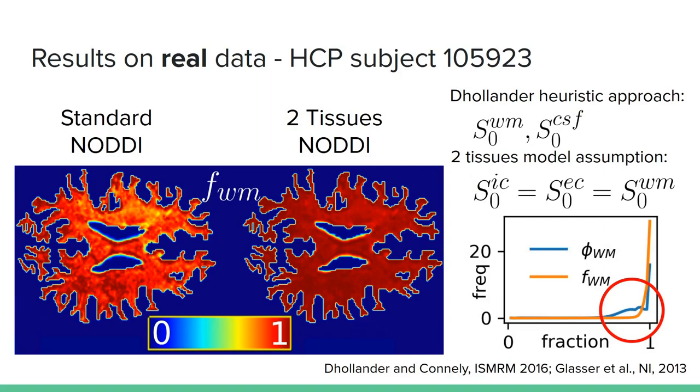In particular, the heuristic approach of Dolander can be used to estimate the S₀ of the white matter and the CSF tissues, and that's what we used in this example, where a subject from the Human Connectome Project database was processed with the two-tissue modeling formulation. You can notice immediately the qualitative difference between the two results from the maps on the left. On the right, you can see the different distributions of the white matter signal fraction and the white matter volume fractions, which confirms what we said before about them not being interchangeable concepts. With a joke, we can say that it's nice to see that we're finally able to observe white matter in the white matter.